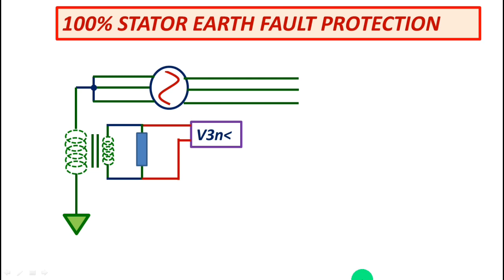Now third harmonic voltage measured at the neutral of the generator will drop for fault close to neutral.